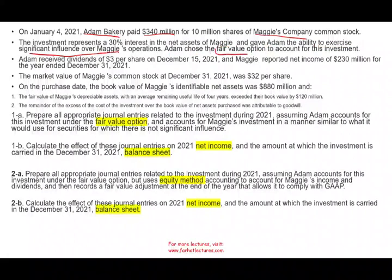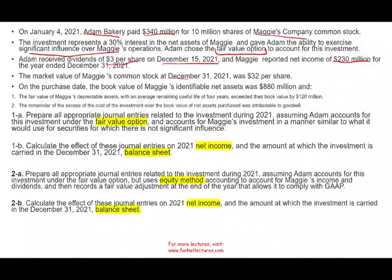Adam chooses the fair value method option for this investment — that's important. Adam received a dividend of $2.60 per share on December 15th. Maggie reported net income of $230 million. The market value of Maggie's common stock on December 31st is $32 per share.